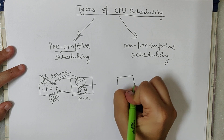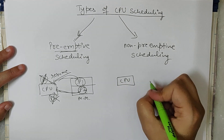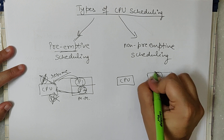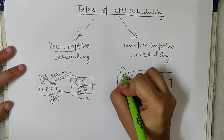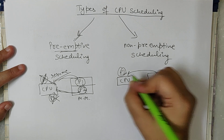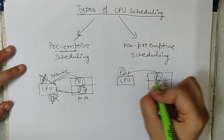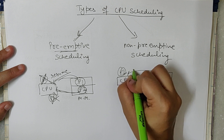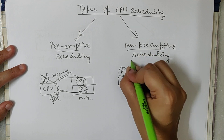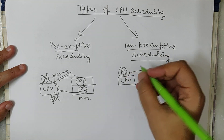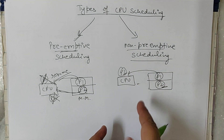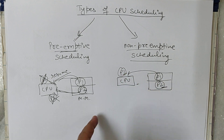In non-preemptive scheduling, if P1 is accessing the CPU and P2 arrives with higher priority, P2 will still not preempt P1. P1 will continue executing until it finishes — you cannot take over the CPU from a process that is already executing.